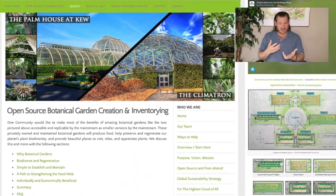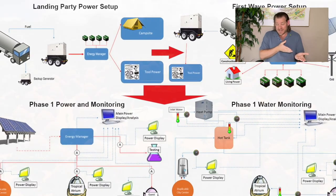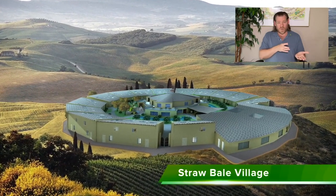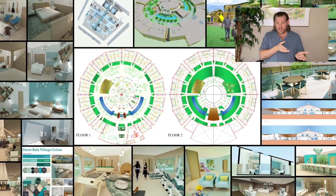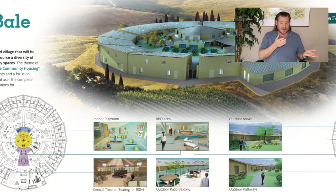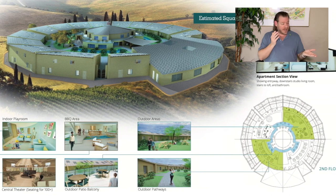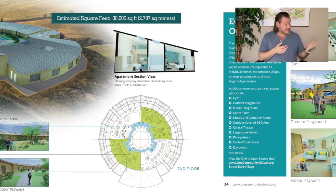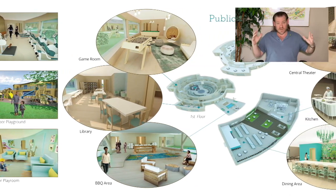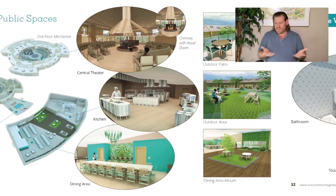Maybe somebody wants to participate in our fulfilled living and social architecture, or run a home-based education program built on the most revolutionary education approaches humanity has created — Waldorf, Reggio, Montessori, the nine intelligences, Orff — all combined into one. Maybe somebody wants to apply one of our economic models, run their own non-profit, operate a resource-based economy or tool library, or use our open source software for managing a virtual team that we're growing to 300-plus people. These are just examples — just tastes of what we're doing.